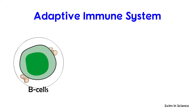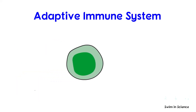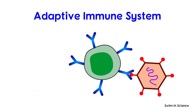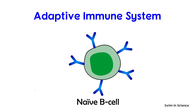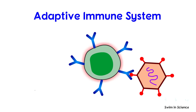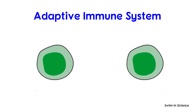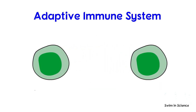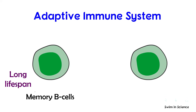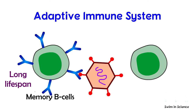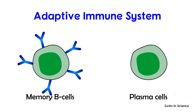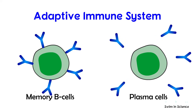B lymphocytes are called B cells as they mature in the bone marrow. When B cells leave the bone marrow, they express antibodies, which are antigen-binding receptors. A B cell that has not encountered any antigen is known as a naive B cell. Once it encounters a specific antigen bound to it, it starts multiplying rapidly, forming two kinds of progeny: memory B cells, which have a long lifespan and will be involved in future infections by the same pathogen, and plasma cells, which secrete enormous amounts of antibodies, may have little or no bound antibodies on their membrane, and have a short lifespan.